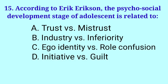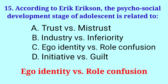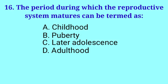According to Eric Erikson, the psychosocial development stage of adolescence is related to Ego identity versus role confusion. The period during which the reproductive system matures can be termed as Puberty.